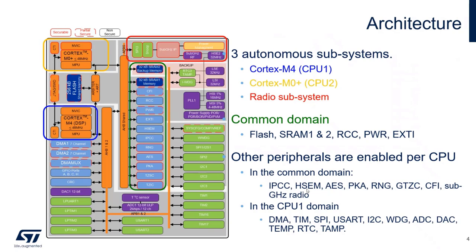Peripherals enabled per CPU include the inter-processor communication controller, semaphores, AES-PKA, sub-PKA accelerator, random number generator, TrustZone, common flash interface, and sub-GHz radio. The sub-GHz radio can be assigned to Cortex-M0 or Cortex-M4. Within the CPU1 domain, we have standard peripherals well-known from the STM32-L4 family. Secure peripherals are marked in red: AES, random number generator, PKA, TrustZone, and TrustZone interrupt controller. We can partially secure some peripherals like flash memory and SRAM — isolating part of flash and SRAM as secure. Some peripherals are security-aware, like DMA channels.